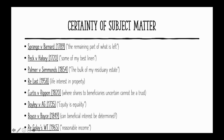Moving on to Peck v Halsey in 1720. In this case, the wording 'some of my best linen' was held by the court to be too uncertain as certainty of subject matter, and no trust could be created. This is quite intuitive. Looking at the wording 'best linen,' 'best' is not very quantifiable — it could mean most economically valuable, most sentimentally valuable, or aesthetically valuable. It is therefore very contentious, and no trust could be created.